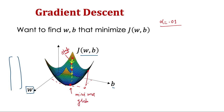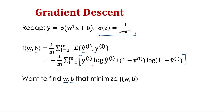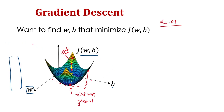This convergence to a global minima is because in logistic regression the loss function is convex. In the case of a convex loss function, the algorithm will always settle around a common global minima, instead of having multiple local minima.